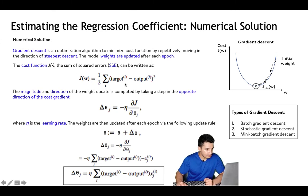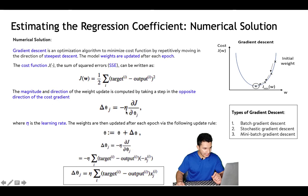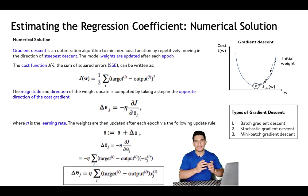In gradient descent, we take a partial derivative of the loss function with respect to each θ. The magnitude and direction of the weight update is computed by taking a step in the opposite direction of the cost gradient: −∂J/∂θⱼ, multiplied by the learning rate. After multiple iterations, the solution converges — and it will definitely converge because the loss function is convex.